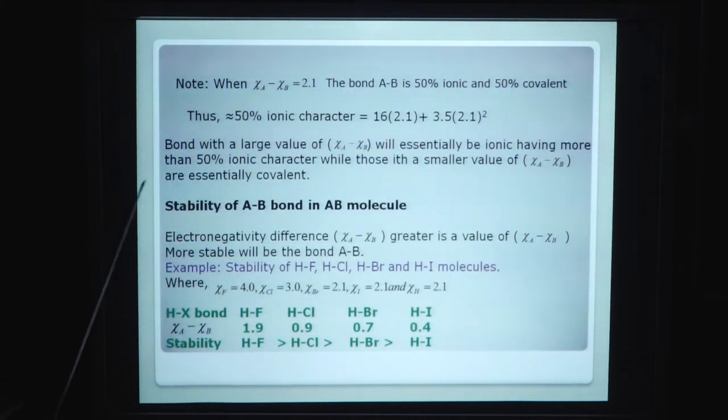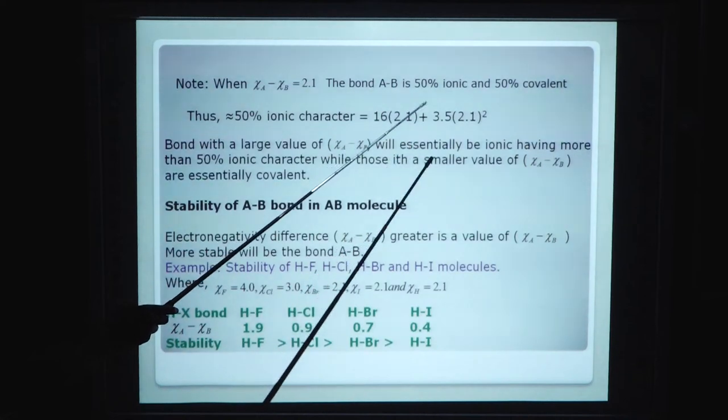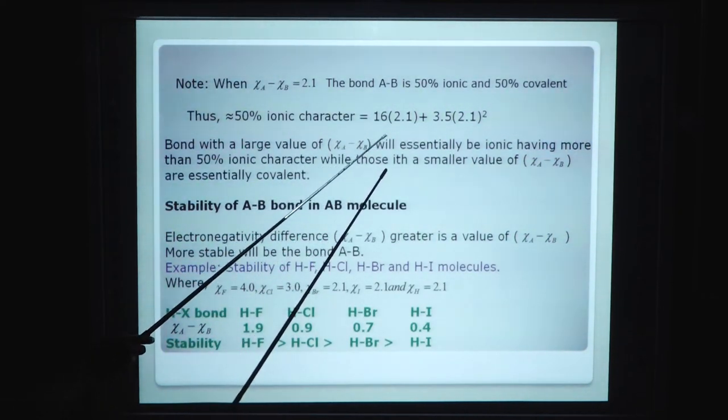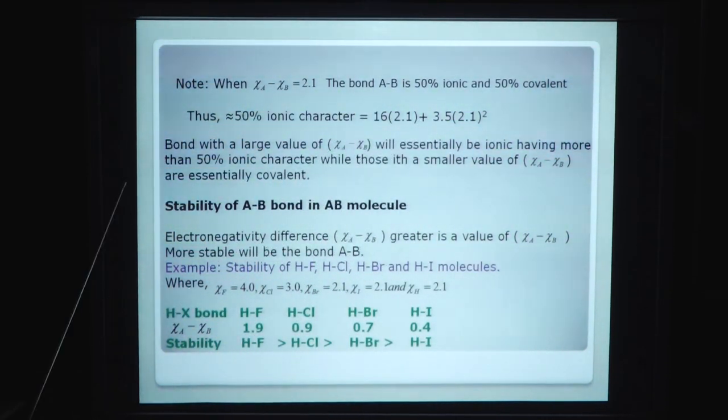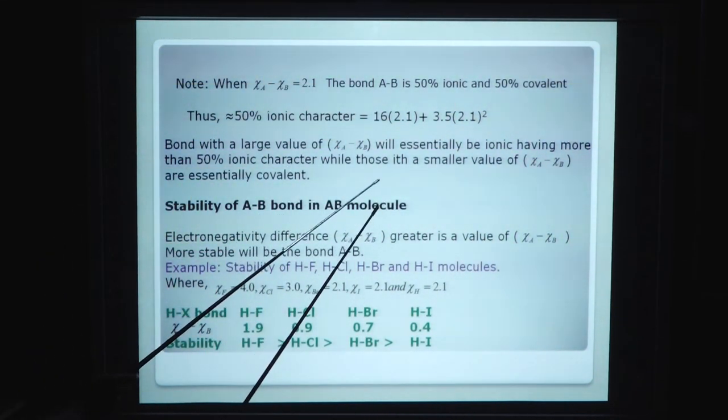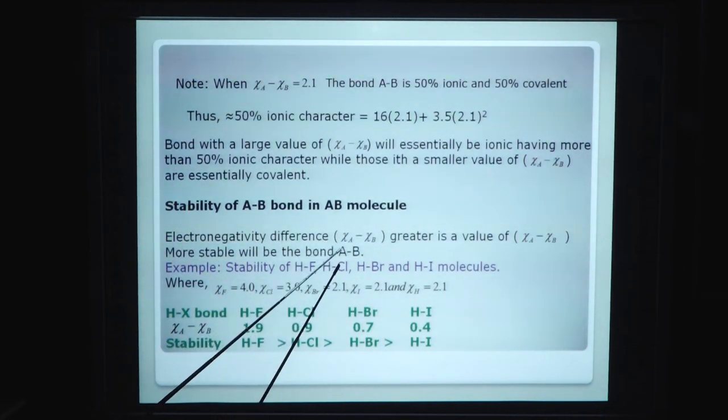Note: where chi-A minus chi-B equals 2.1, the bond AB is 50 percent ionic and 50 percent covalent. Thus, about 50 percent ionic equals 16(2.1) plus 3.5(2.1) squared. The bond with the large value of chi-A minus chi-B will essentially be ionic having more than 50 percent ionic character, while those with a smaller value are essentially covalent. Stability of AB molecule bond: the greater the value of chi-A minus chi-B, the more stable will be the bond AB.